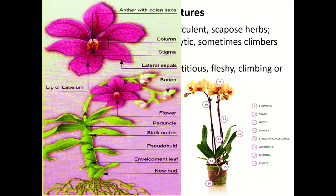Single anther is retained at the top of the column to form a cap-like structure. The other parts you can see here include the stalk node, pseudobulb, envelope leaf, new buds coming out, the peduncle and the flower. Please follow this diagram carefully.